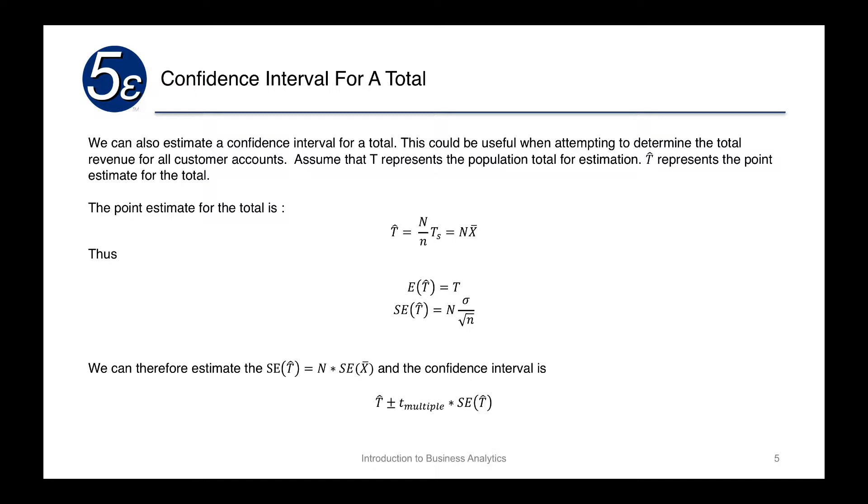Our point estimate for the total is basically given by this T hat, which is equivalent—we'll do the right side because it's a little bit easier—the total population times our sample mean.